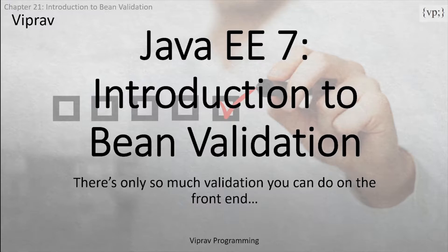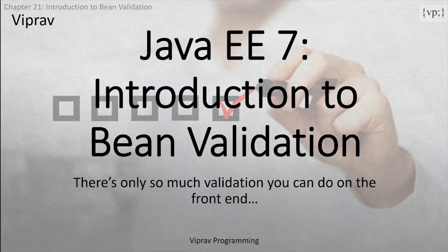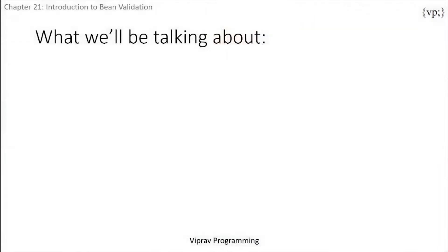Not all validation can be made at the frontend. The frontend can validate data like checking for certain symbols, like the @ sign in emails or number of characters, but the nature of the input has to be checked further than simple character selection. It must be checked if the email is valid, or if the phone number is even reachable. These are validations that bean validation does best.